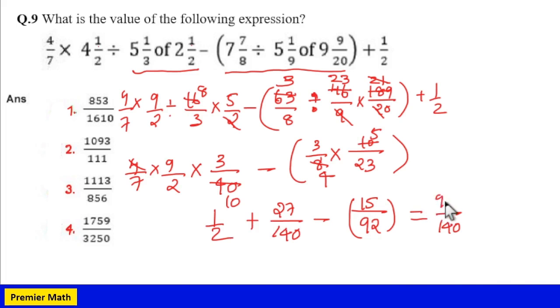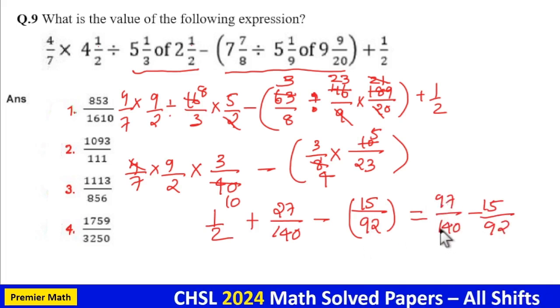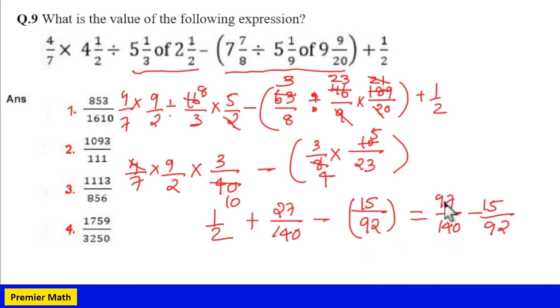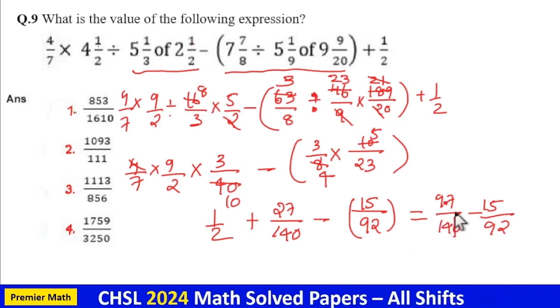Now 2 goes 70 times in 140. So 70 plus 27, 97 numerator minus 15 by 92. Now 97 by 140, I will take it as 9.7 by 14.